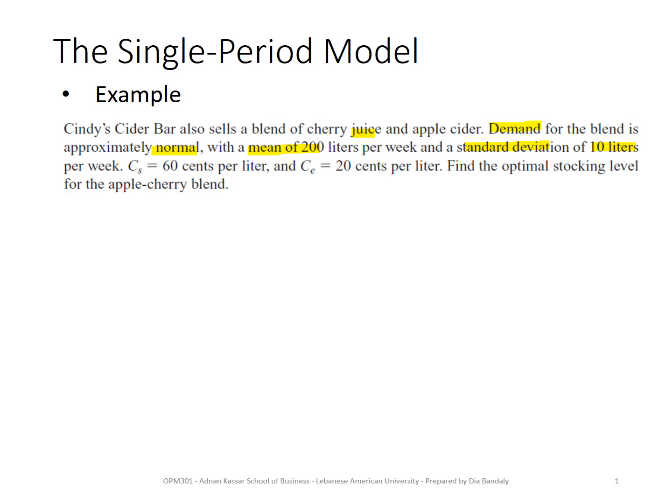In this example we have a shortage cost, or stockout cost, of 60 cents — this comes from the lost profit if you cannot satisfy all demand. We have an excess cost of 20 cents, which most probably represents the purchase cost per liter, assuming all excess will be discarded, giving a CE equal to 20 cents. We need to find the optimal stocking level.